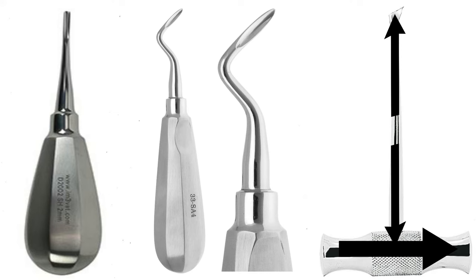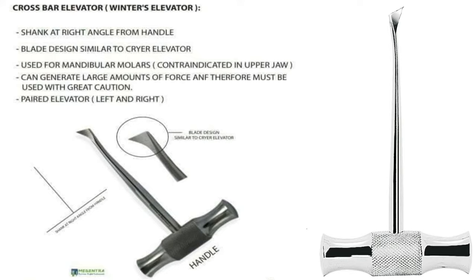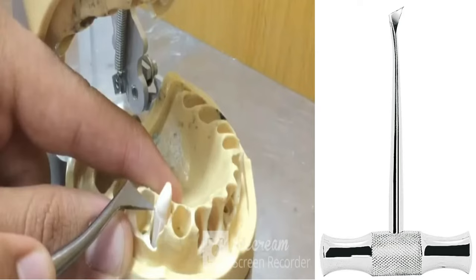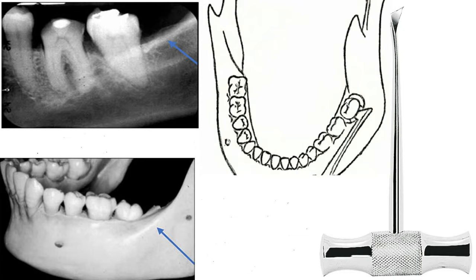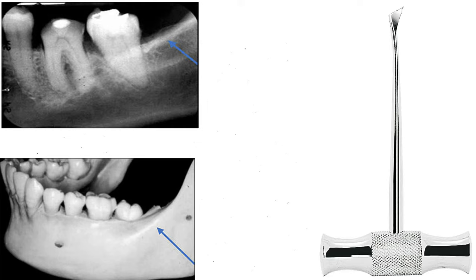This type of crossbar elevator, as the figure shows, is used only in the lower jaw for removal of a root of a molar, after the other root has already been removed with the straight elevator. In certain cases, the T-shaped elevator with the triangle blade may be used to remove a whole third molar of the lower jaw. The tip of the elevator is placed into the root bifurcation buccal to the tooth, using the strong external oblique ridge as a fulcrum.